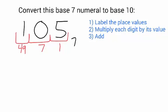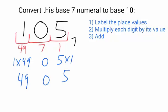Now what I'm going to do is multiply each digit by its value. So the 1 is worth 49, because it's 1 times 49, so it's just 49. The 0 is just a placeholder, so 0 is always just worth 0. The 5 is in the ones column, so it's worth 5 times 1, which is just 5. If I add those up, I get 54, and that's the answer.